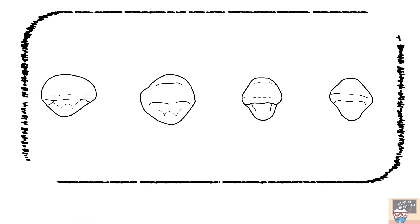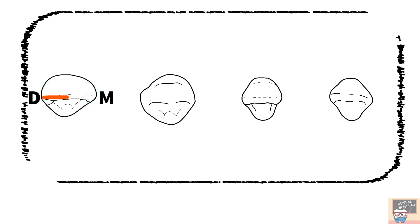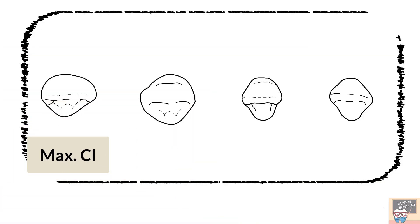Let's now go to the incisal aspect. In the first diagram, the mesiodistal dimension is greater than the faciolingual dimension and the outline is roughly triangular. The incisal edge is straight and almost at the center of the tooth faciolingually. The faciolingual dimension is greater on the distal side as compared to the mesial side, and the cingulum appears a bit distally displaced. So all these features will help you identify the maxillary central incisor.